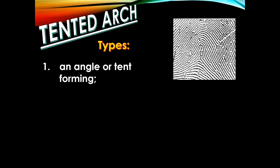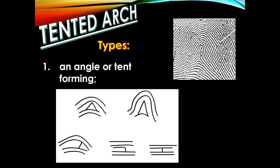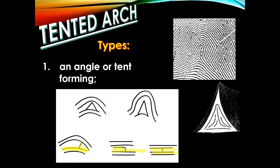The first type of tented arch is the angle or tent-forming type. If you observe the examples, you can see the angles clearly. We also have the tent-forming type, which looks like a tent — the ridges tend to form like a tent shape, just like an actual tent.